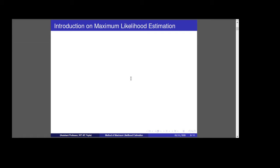Now we start with the likelihood function. Let x1, x2, ..., xn be a random sample of size n from a population with density function or probability mass function f(x, θ), where θ is the unknown parameter and θ belongs to the parameter space.